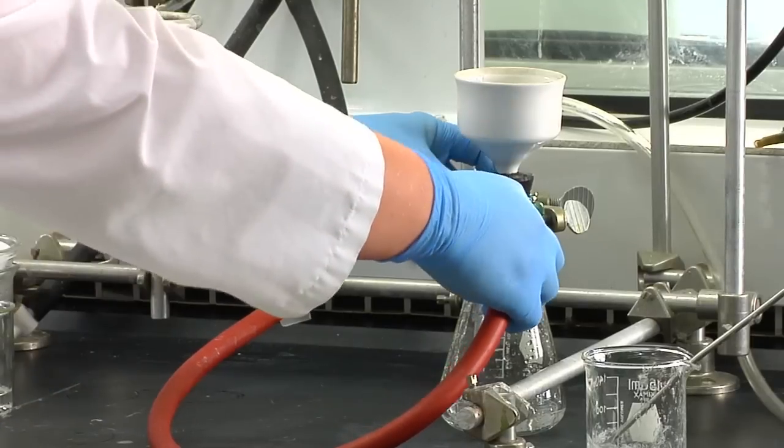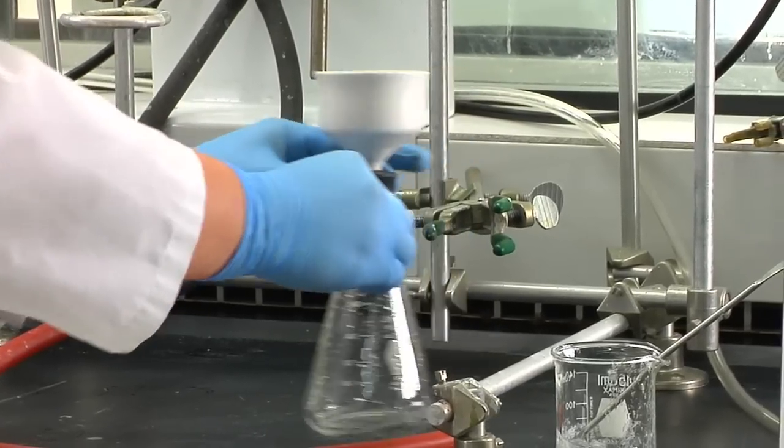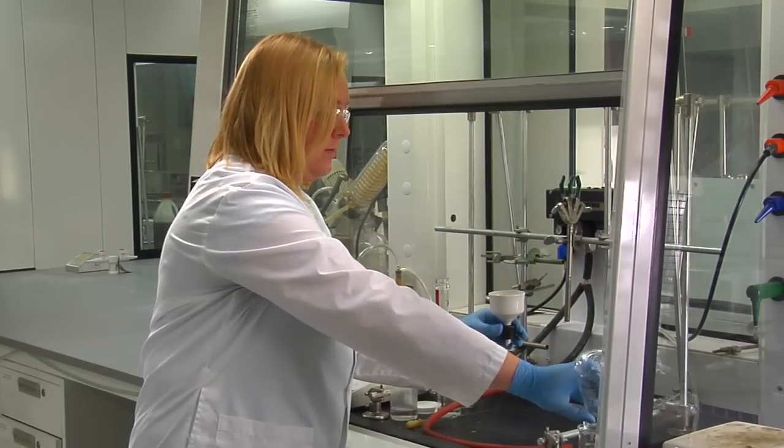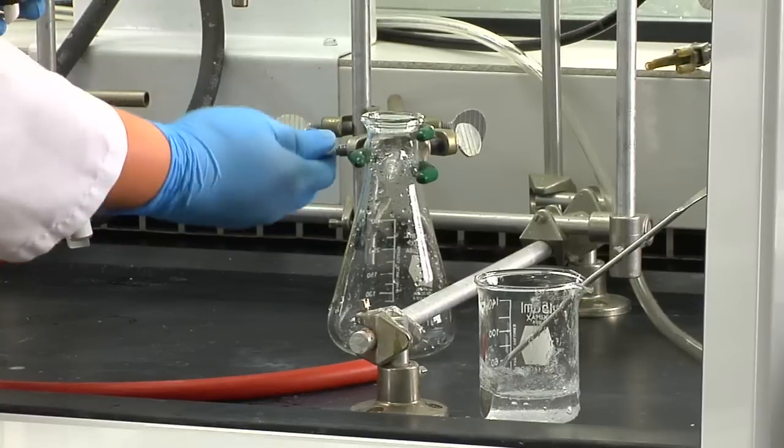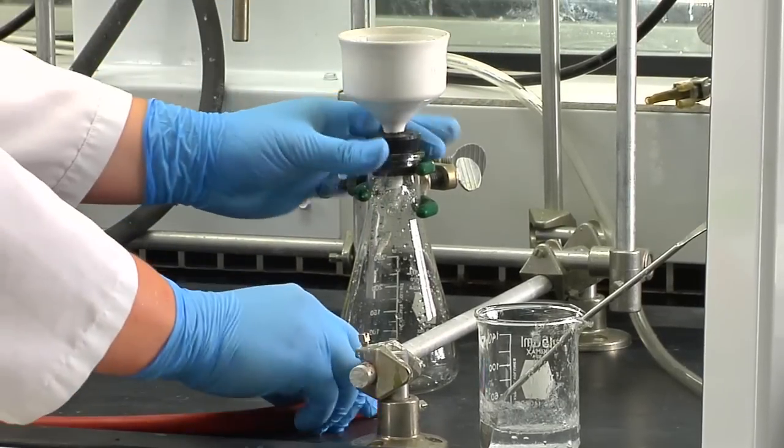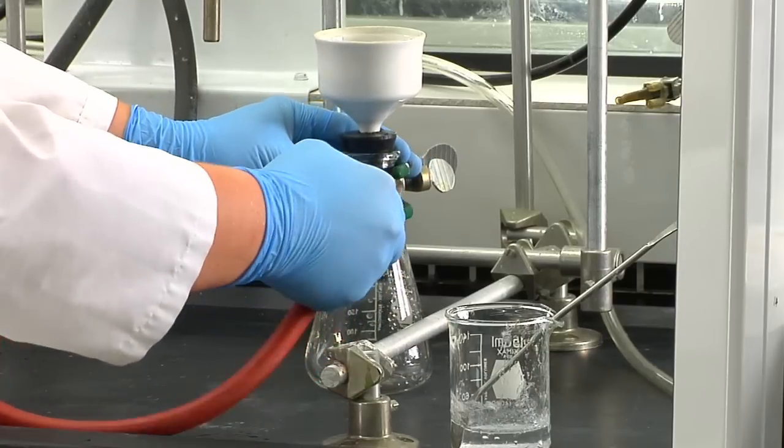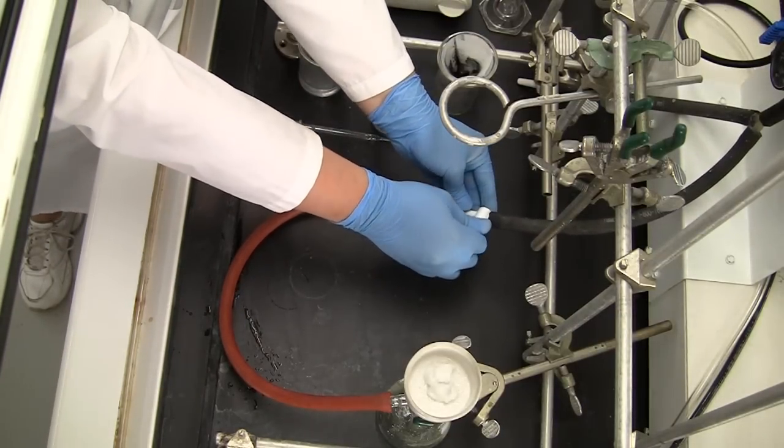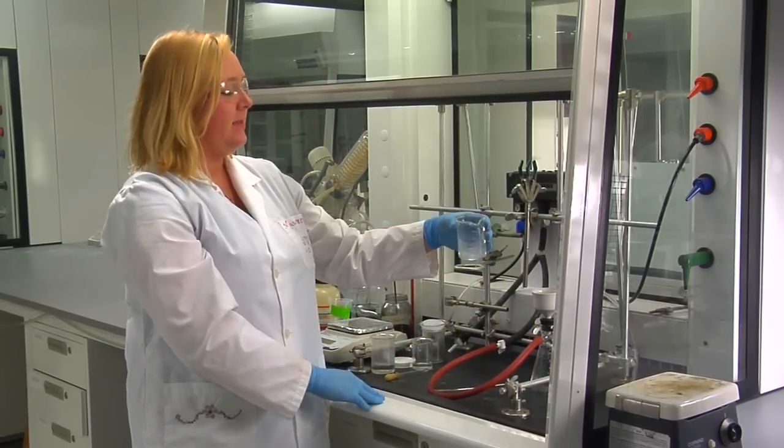To do this, just remove the hose from the filter flask, unclamp it, and pour this liquid into your beaker. And set this apparatus up again. You'll apply the suction again. Turn the stopcock. Then you can rinse out any remaining salicylic acid.